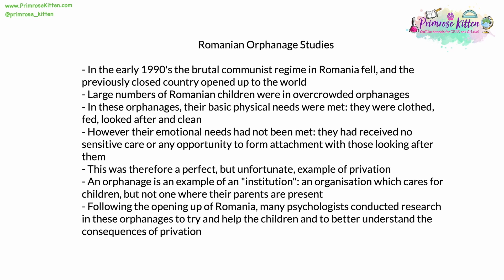Unfortunately, their physical needs being met meant that their emotional needs had not been met. They had received no sensitive care or any real opportunity to form attachment with the people looking after them. The people looking after them changed regularly, and there would be many at one time — they had no ability or opportunity to form a sole, good attachment with one of them. This was therefore a perfect, but extremely unfortunate, example of privation. An orphanage is an example of an institution: an organisation which cares for children but where biological parents are not present, presenting both opportunities and difficulties.